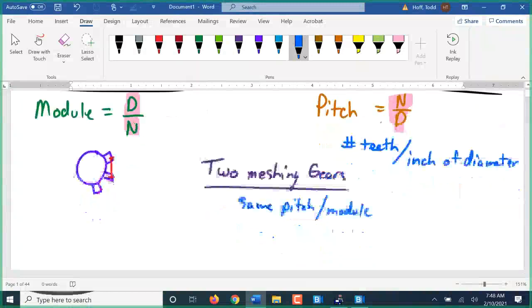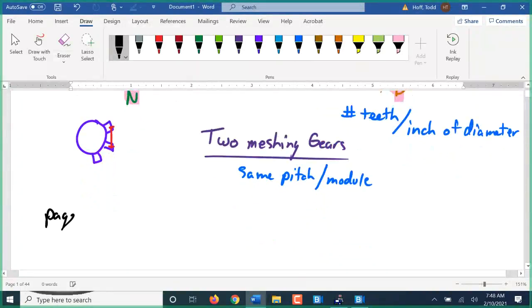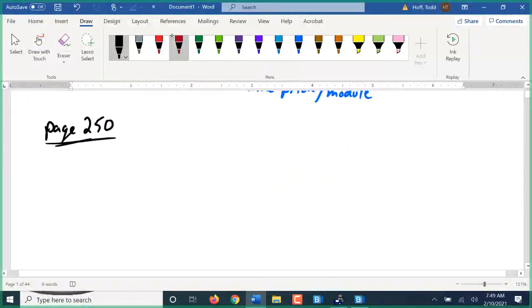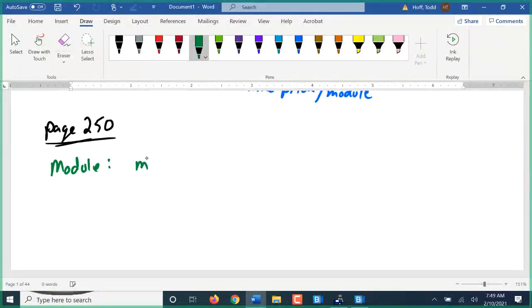So for our metric module system, we have a table on page 250 giving all of our formulas for the modules. Let's take a look at some example formulas. If I have a gear with a module M of 9 millimeters, and I'm told it has 24 teeth, let's find some things about it.